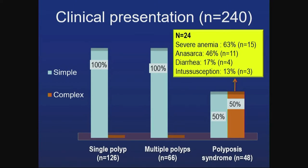All single and multiple polyp patients presented with simple presentation, while 50% of the polyposis syndrome patients presented with complex presentation, including severe anemia, anasarca, diarrhea, and intussusception in varying proportions.